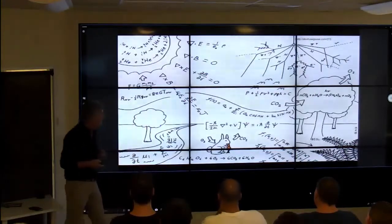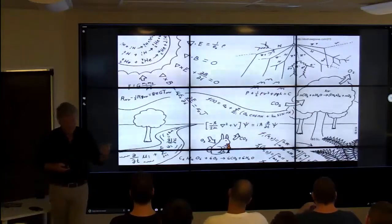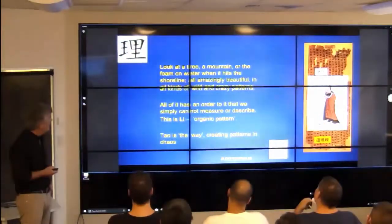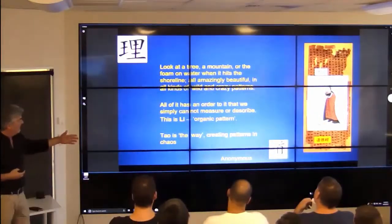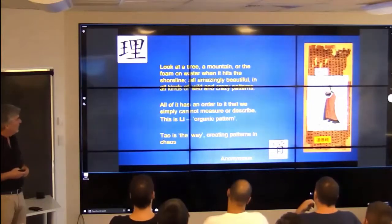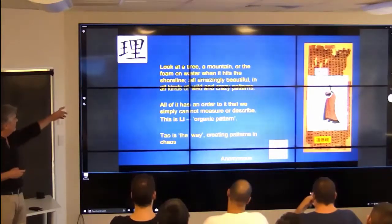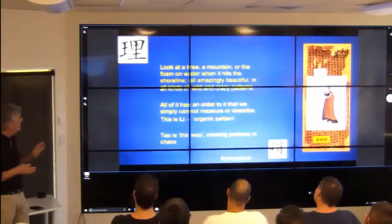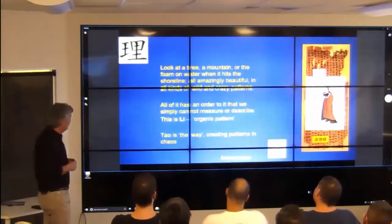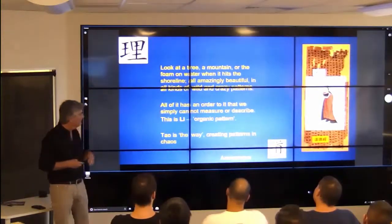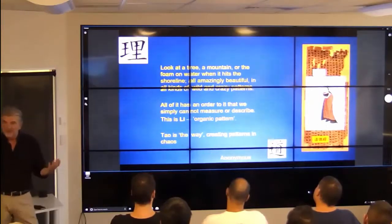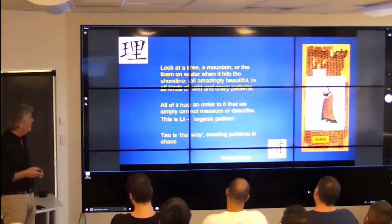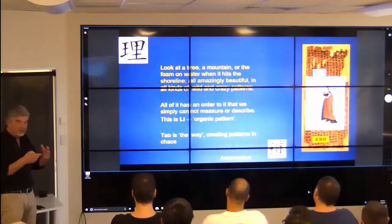The field that has been wondering about how to connect the dots — and this is not totally new — has some great examples. This is already from the time of Lao Tzu, where it said: look at the tree, a mountain, or foam, or water when it hits the shoreline. All amazingly beautiful, all kinds of wild and crazy patterns. All of it has an order to it that we simply cannot measure or describe. This comes with Chinese wisdom more than five or six thousand years old — at those times, people were already thinking about how things are connected together.